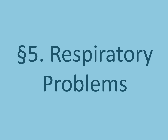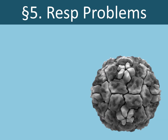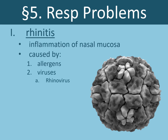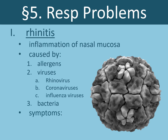In the fifth and final section, we discuss various problems that can arise in the respiratory system. One of the most common is rhinitis, or inflammation of the nasal mucosa — the prefix 'rhino' means nose. Rhinitis is caused by allergens like pollen, viruses like rhinovirus and coronaviruses which cause the common cold, influenza viruses, and bacterial infections. Symptoms include a runny nose and post-nasal drip.